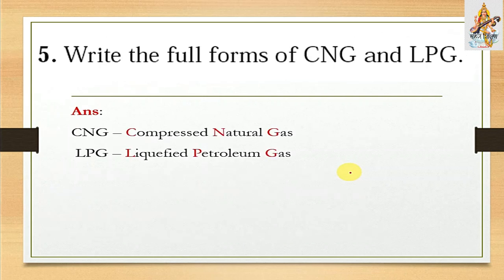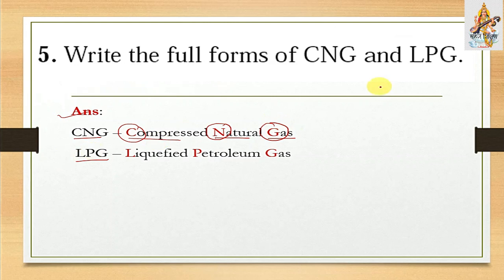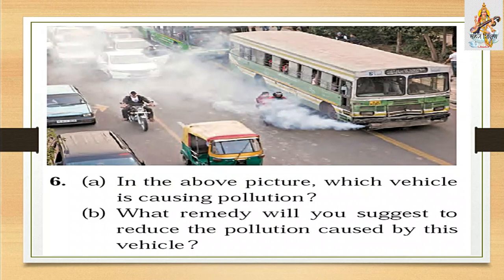Question number five: Write the full forms of CNG and LPG. CNG stands for Compressed Natural Gas — C means Compressed, N means Natural, G means Gas. LPG stands for Liquefied Petroleum Gas — L means Liquefied, P means Petroleum, G means Gas.